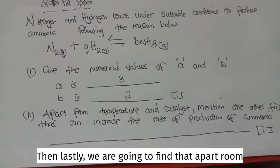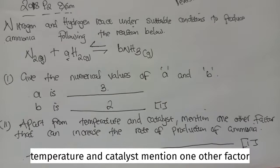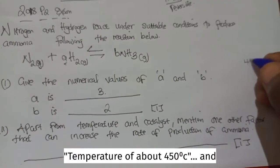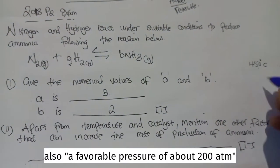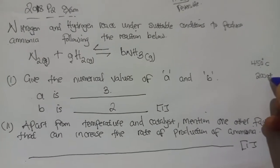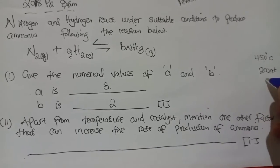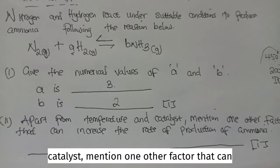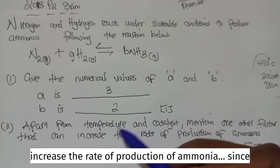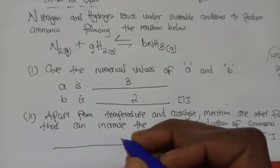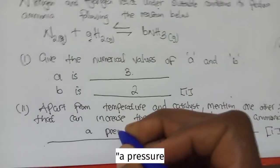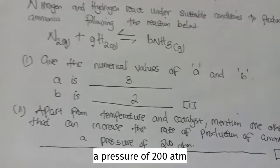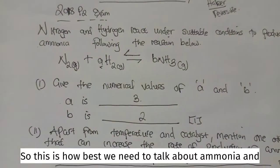Lastly, we are going to find that apart from temperature and catalyst, mention one other factor that can increase the rate of production of ammonia. Ammonia is being dependent on a favorable temperature of about 450 degrees Celsius and also a favorable pressure of about 200 atmosphere. Then, ammonia is also being able to depend for its production a catalyst of iron. So, these are the three conditions. Now, in the question they are saying, apart from temperature and catalyst, mention one other factor that can increase the rate of production of ammonia. Since they have mentioned temperature and catalyst, we are going to talk about pressure. So, our answer here is going to be a pressure of 200 atmosphere.